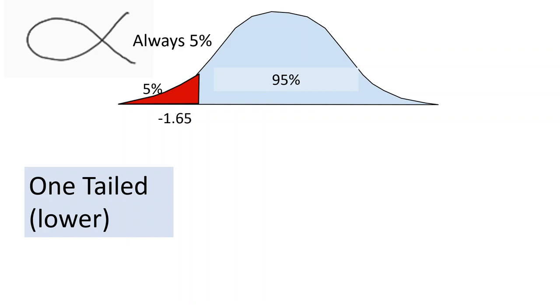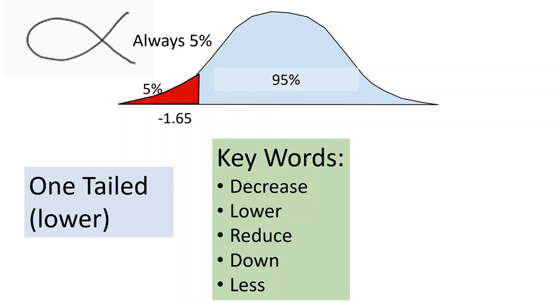So the research question keywords would be things like, does it decrease your mood? Does it lower your performance? Does it reduce your score? Does it make the speed go down? Does it make you less happy? So these are all words that suggest you're going to be on the lower end of the scale.